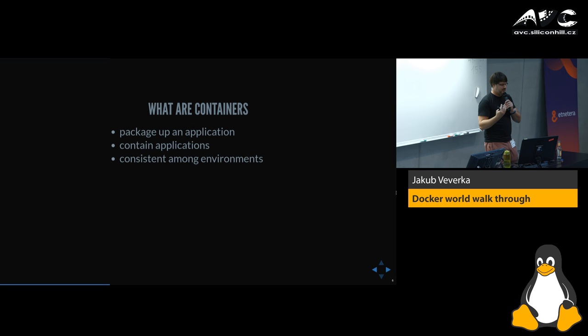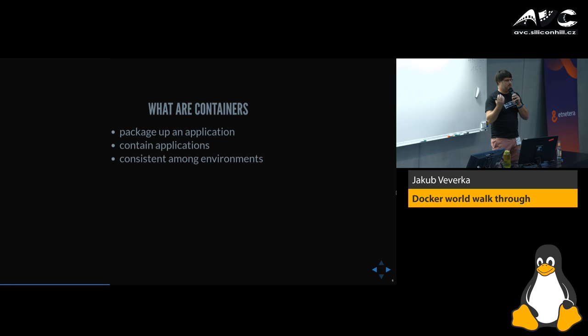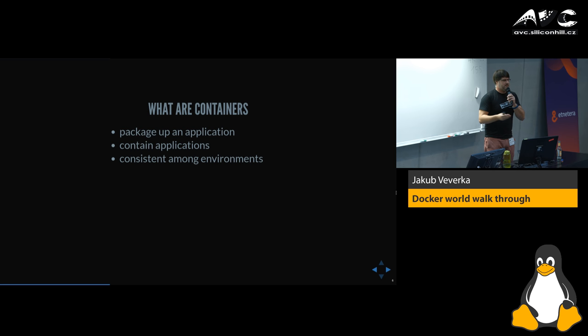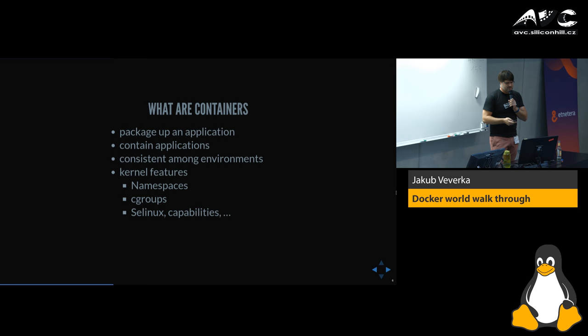Once you create a container image, it contains all the libraries and everything you want to run. The cool thing is you try something on your laptop — you download an Ubuntu image, use it, say okay this configuration works, pack it, push it, and someone else can try it. You can run it in CI, even in production, and it always has the same libraries, same files, same dependencies. So it shouldn't happen that something works on your laptop but not in production. That's consistency.